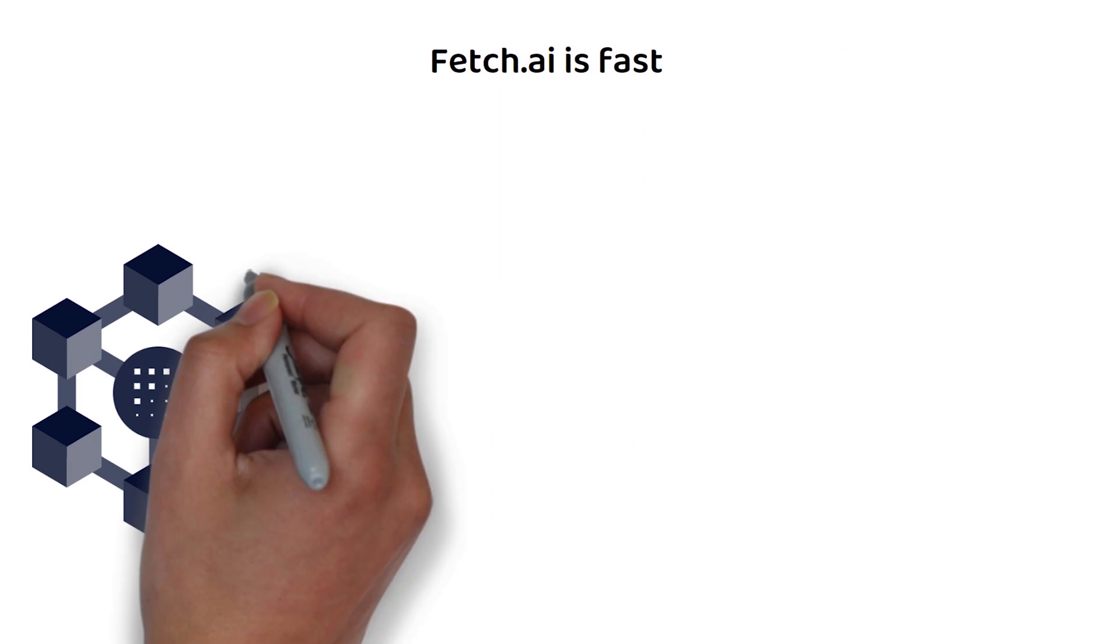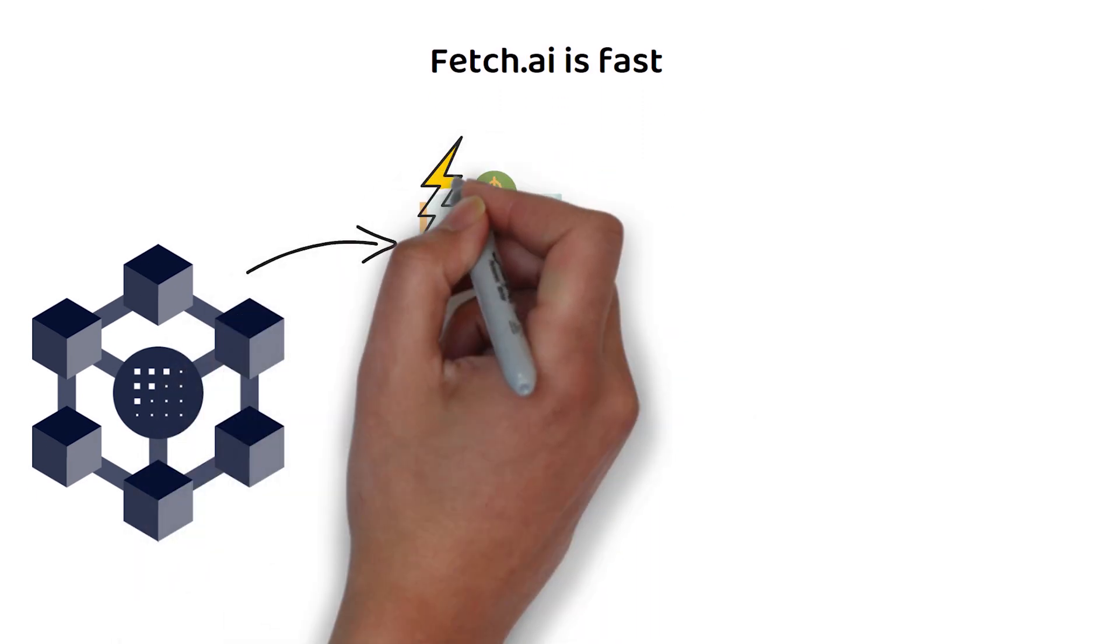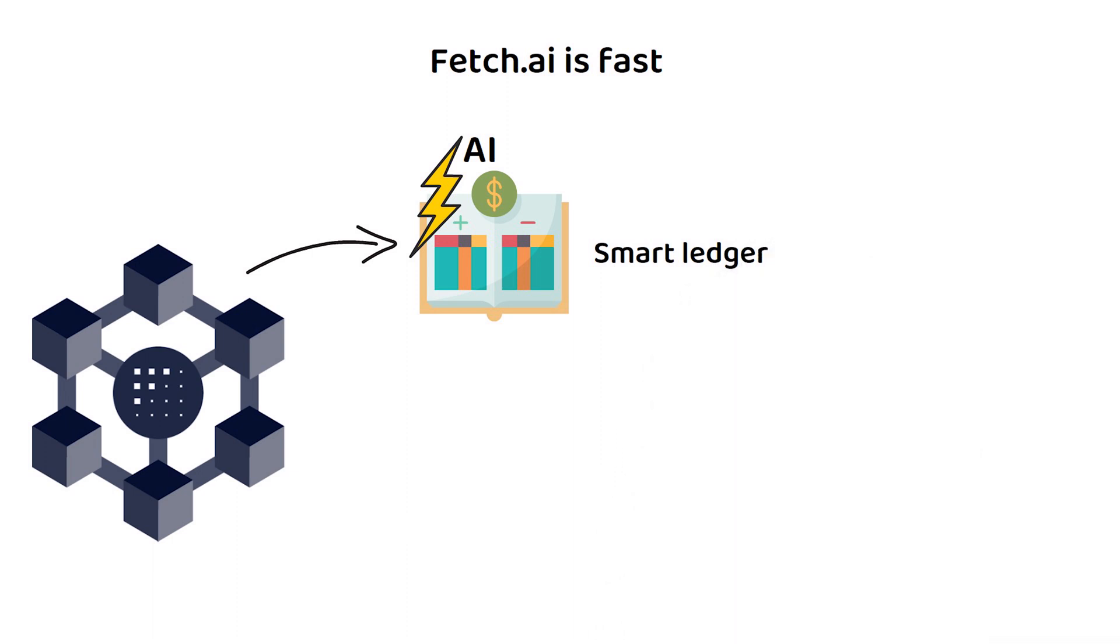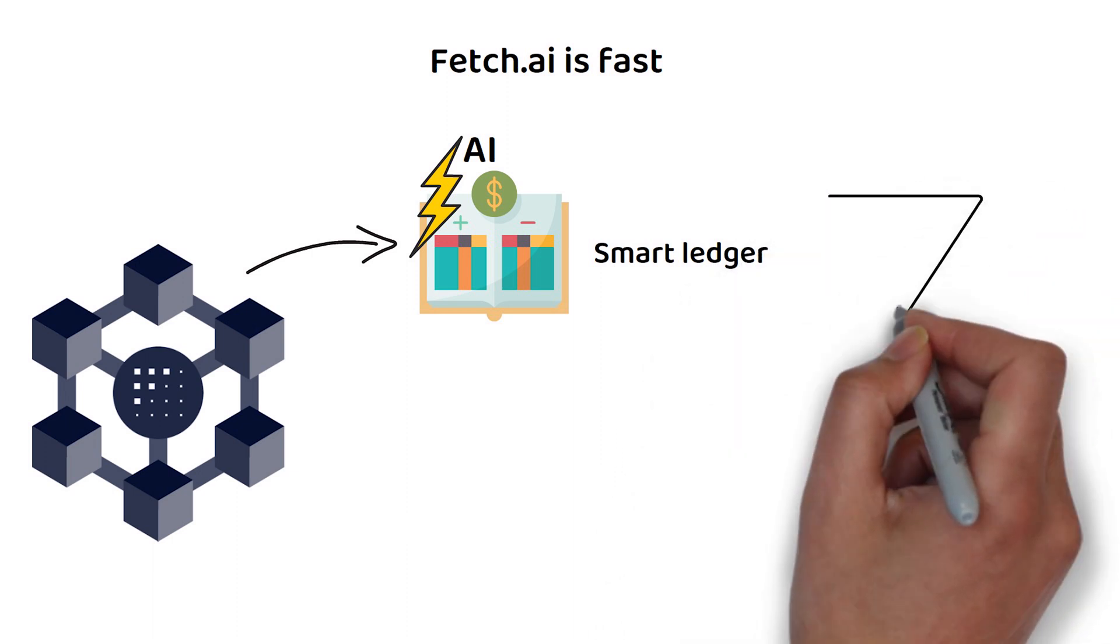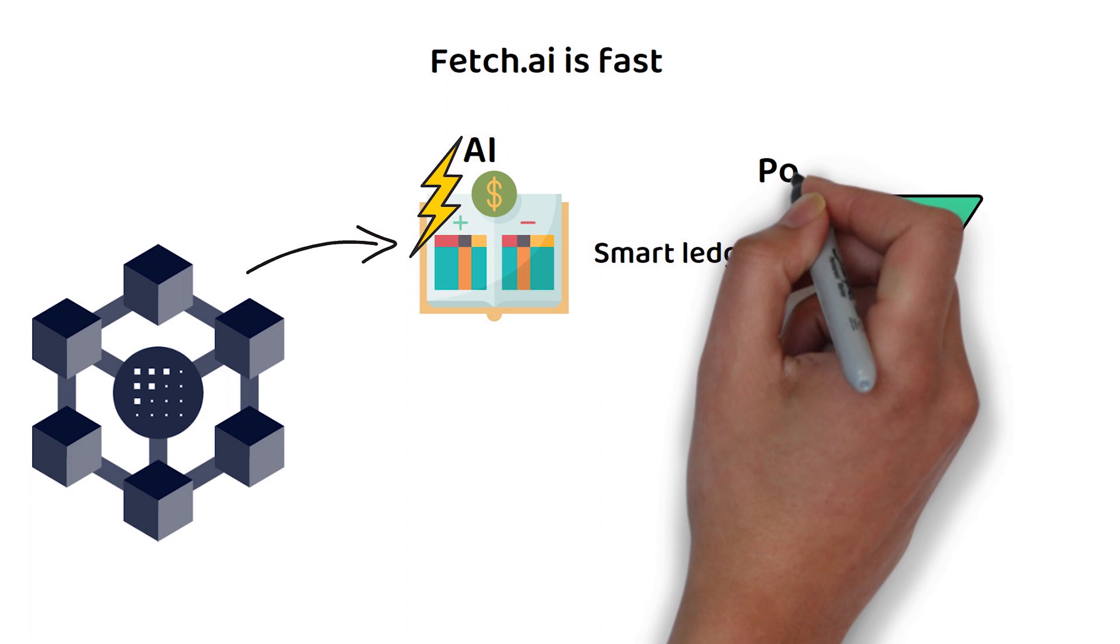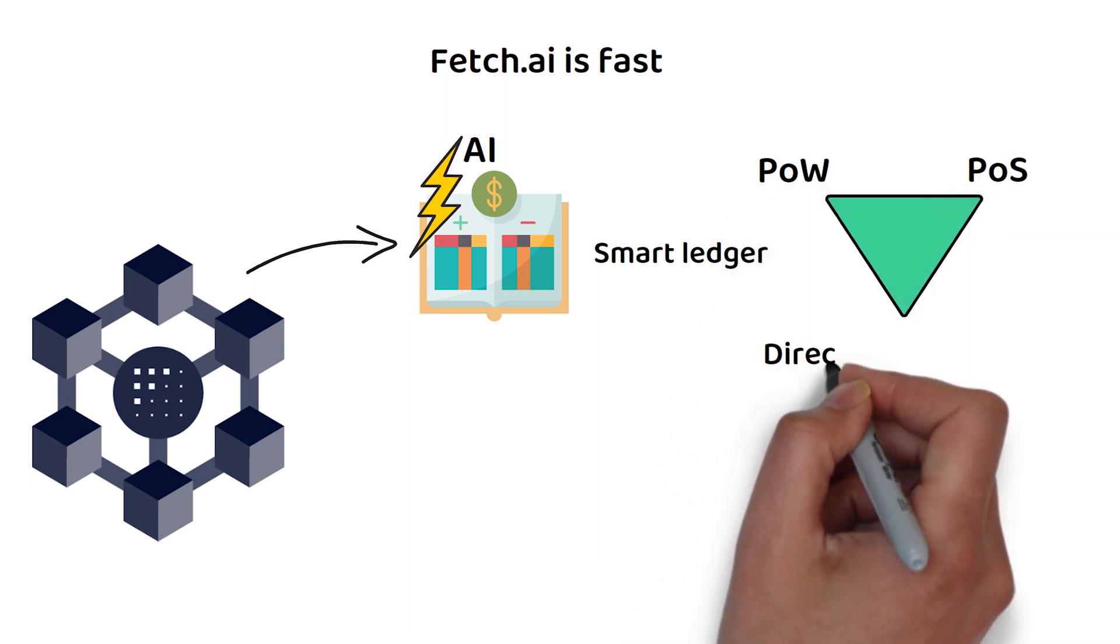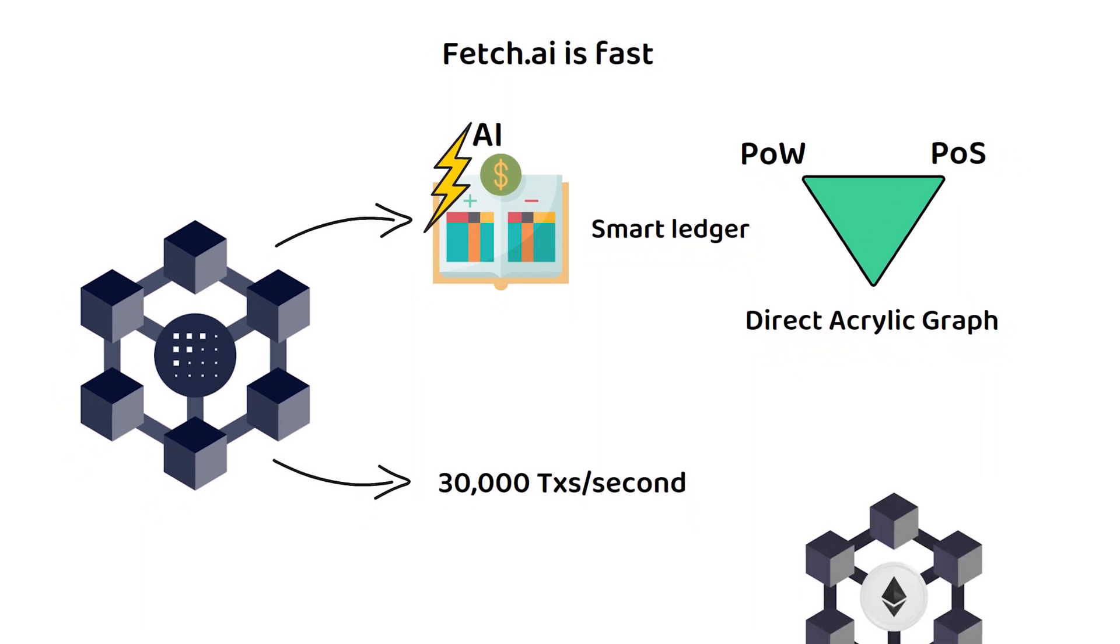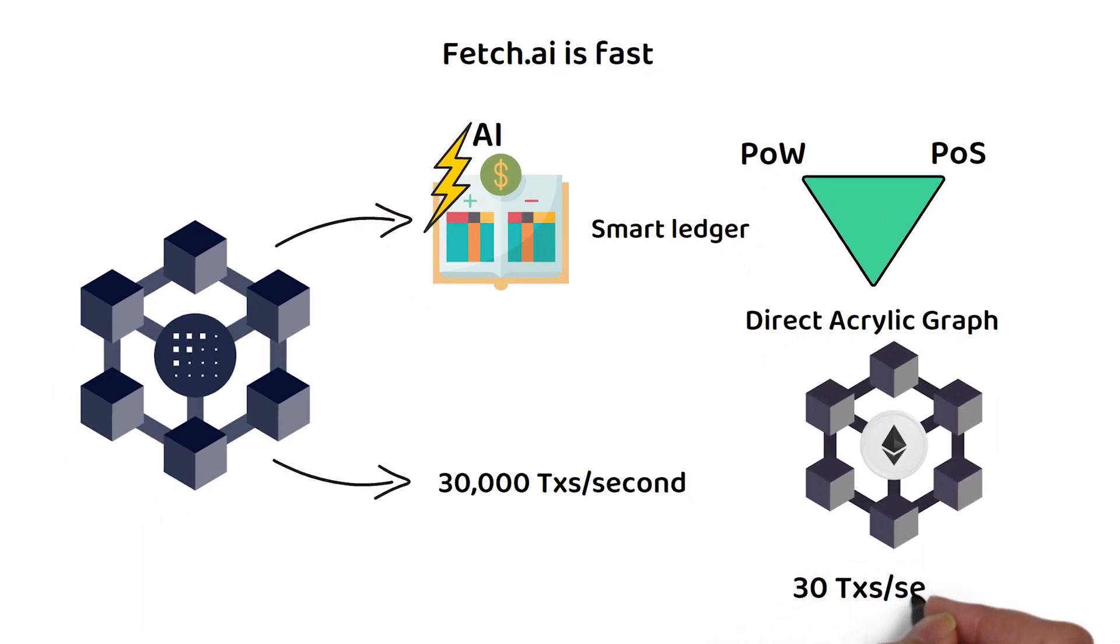Fetch.ai also has the Smart Ledger, which is an AI-powered blockchain ledger that stores transactional data of all economic agents. This Smart Ledger is a combination of proof-of-work, proof-of-stake, and directed acyclic graph. The end result is a blockchain capable of processing up to 30,000 transactions per second. For comparison, Ethereum can process around 30 transactions per second, making Fetch.ai lightning fast in terms of speed.